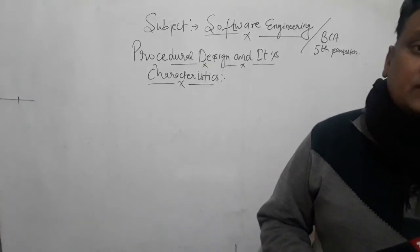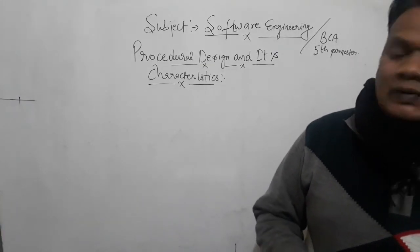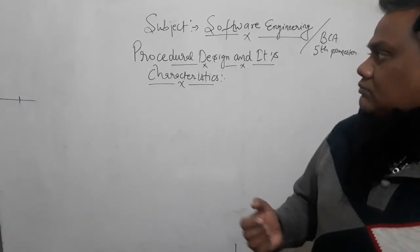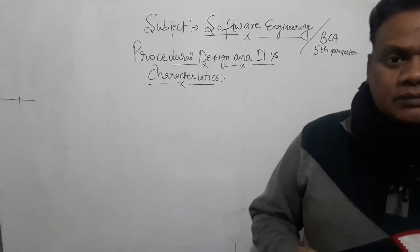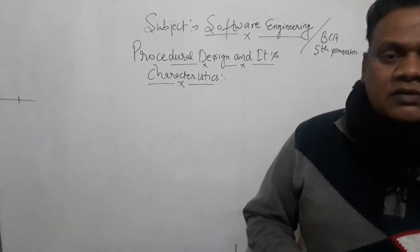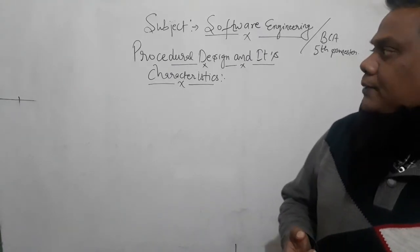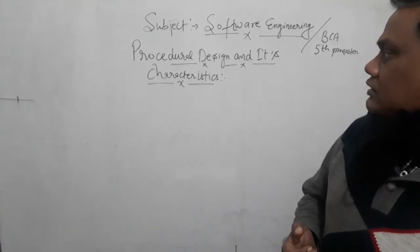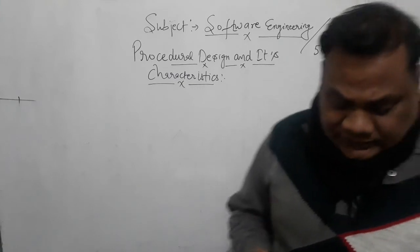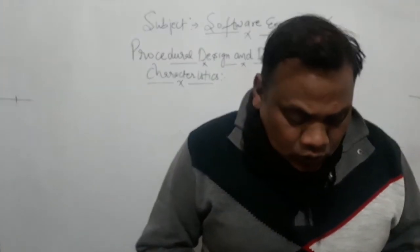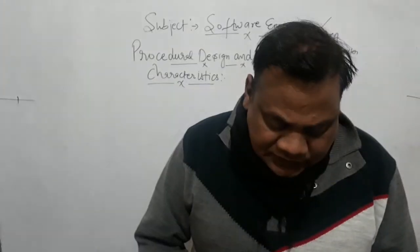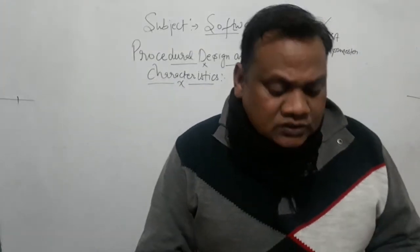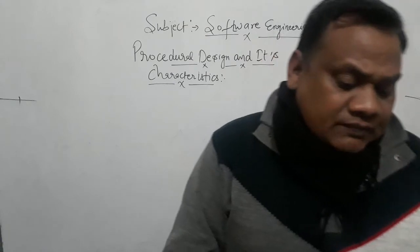So in today's sequence, the topic of Software Engineering in BCA 5th semester is Procedure Design and its Characteristics. This is what we will discuss in Software Engineering for BCA 5th semester.